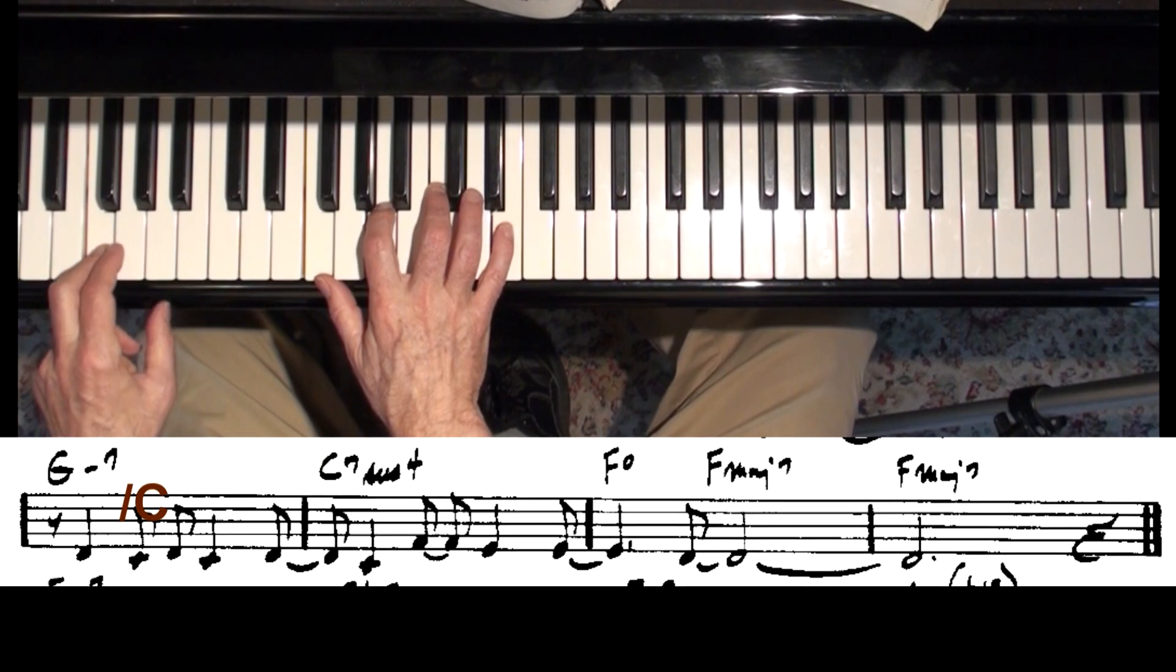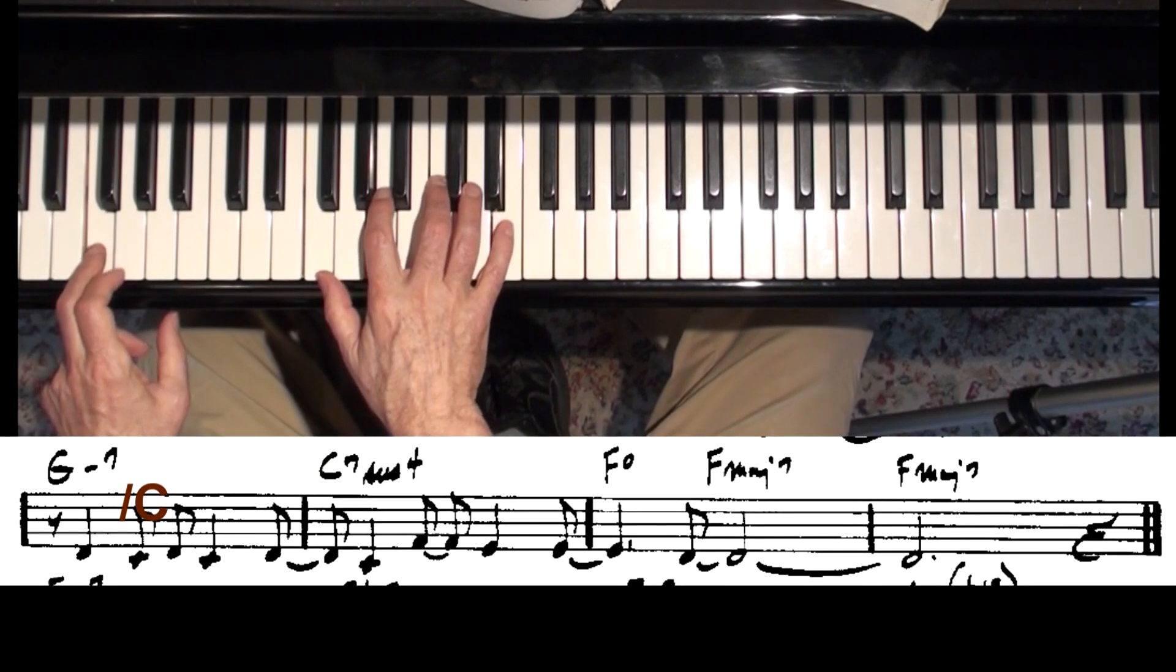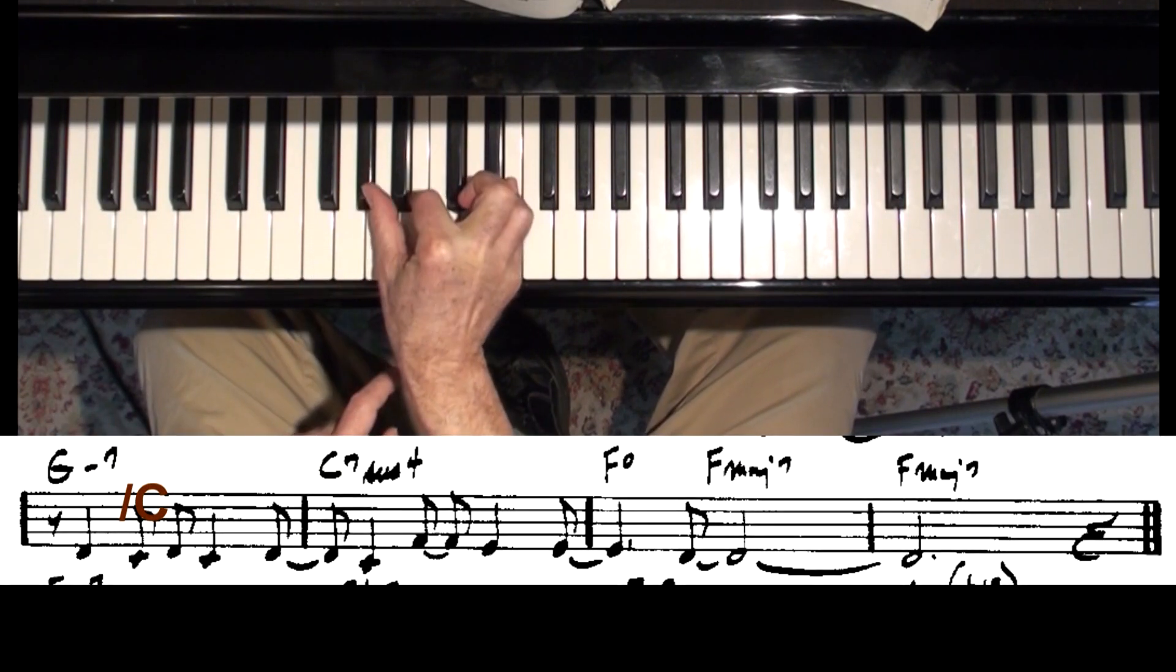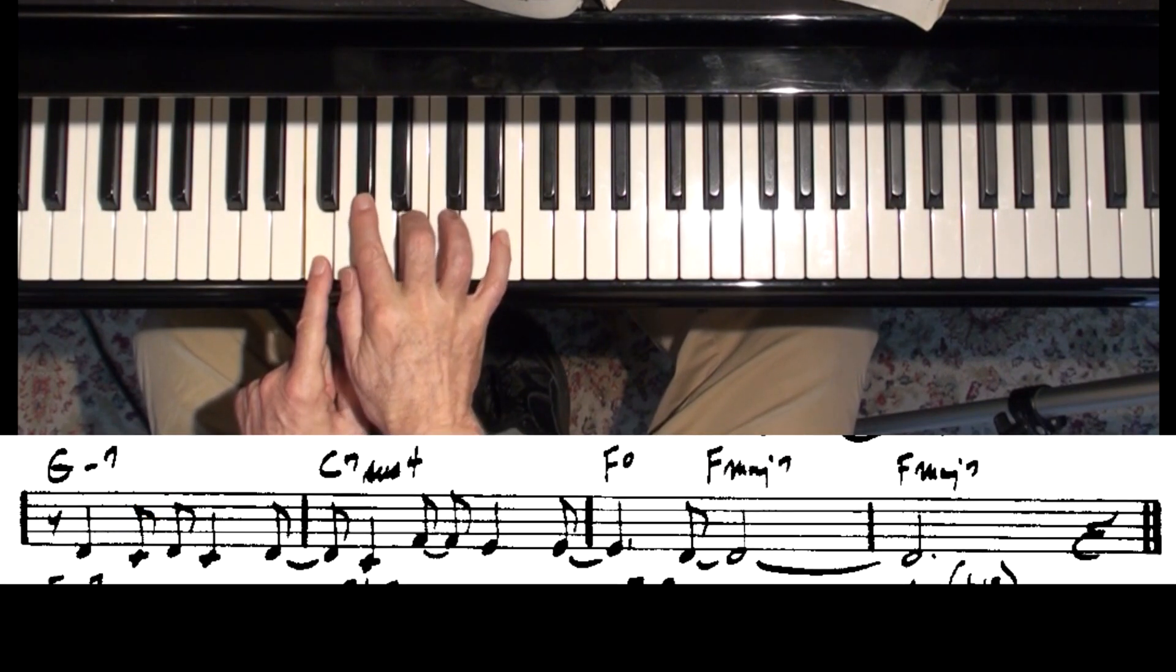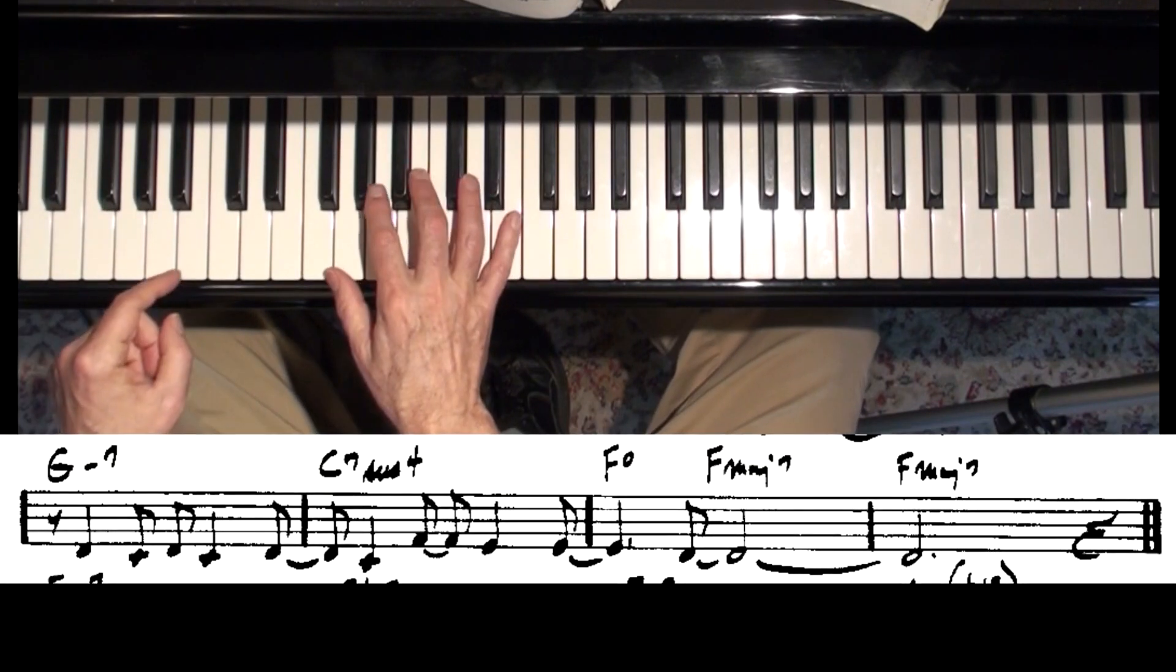And on some versions it had the diminished chord. Other versions just had F major seventh. Astrid Gilberto's version is an E to a F major seventh, which is very much like the F diminished, because if you have E and put an F on the bottom, that's an F diminished with a tension. So it's kind of the same thing.